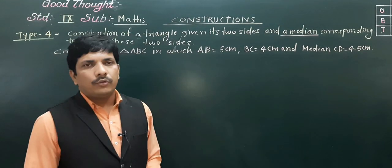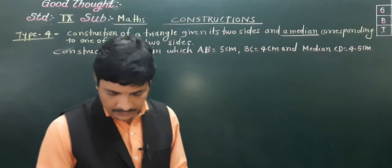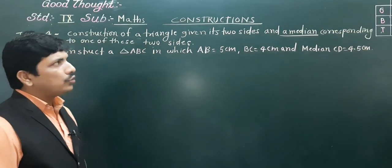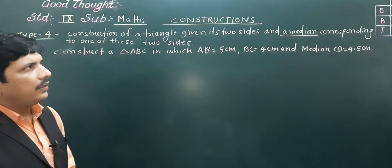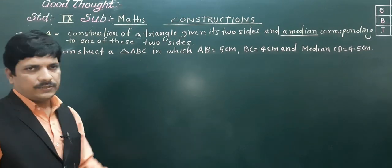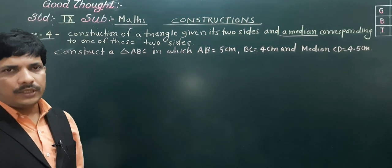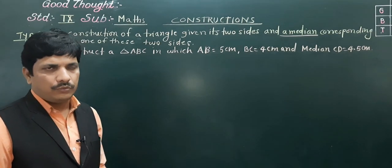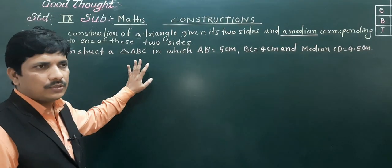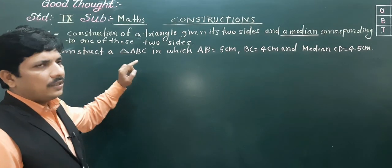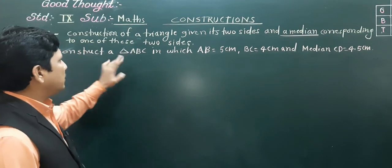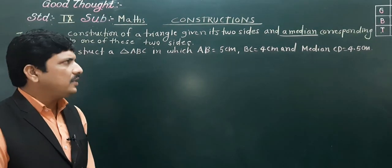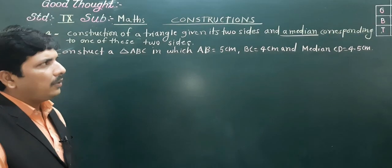Hello everybody. Today we are going to see the construction of a triangle when two sides and a median corresponding to one of these two sides are given. The lengths of any two sides are given, and the median is given. We will see how to construct the triangle. This construction is very easy. Here one example is given: construct triangle ABC in which AB is equal to 5 centimeter, BC is equal to 4 centimeter, and median CD is